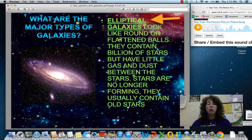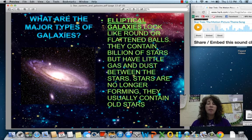Elliptical galaxies look like round flattened balls. They have billions and billions of stars, but they don't have as much gas and dust between them. Typically in elliptical galaxies, the stars are no longer forming. And so usually they contain much older stars.